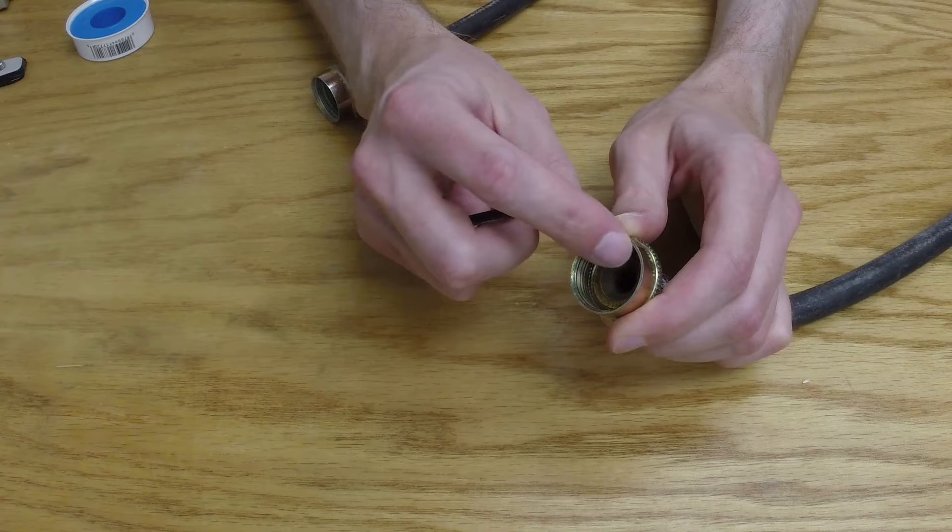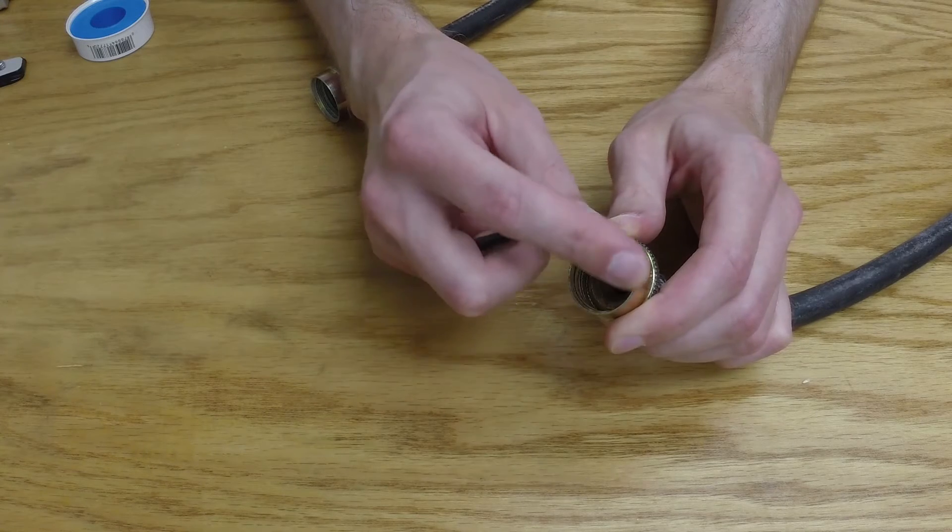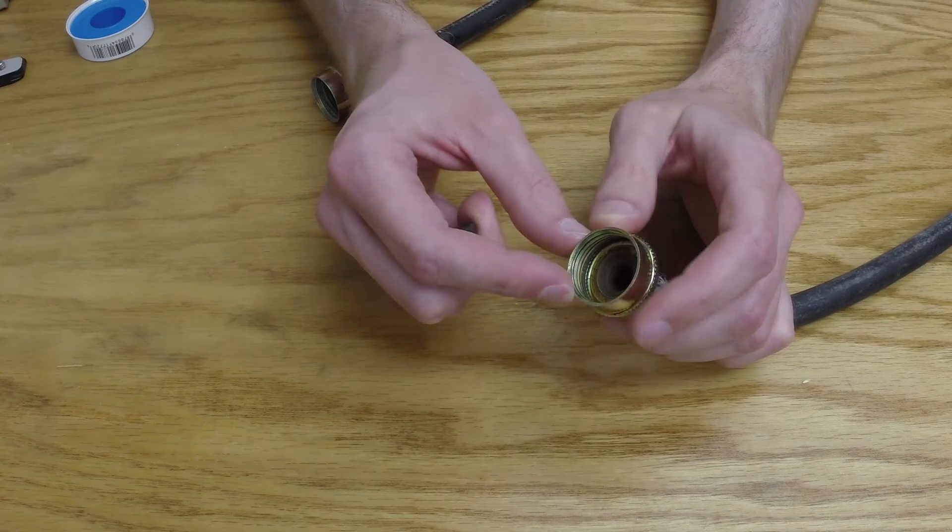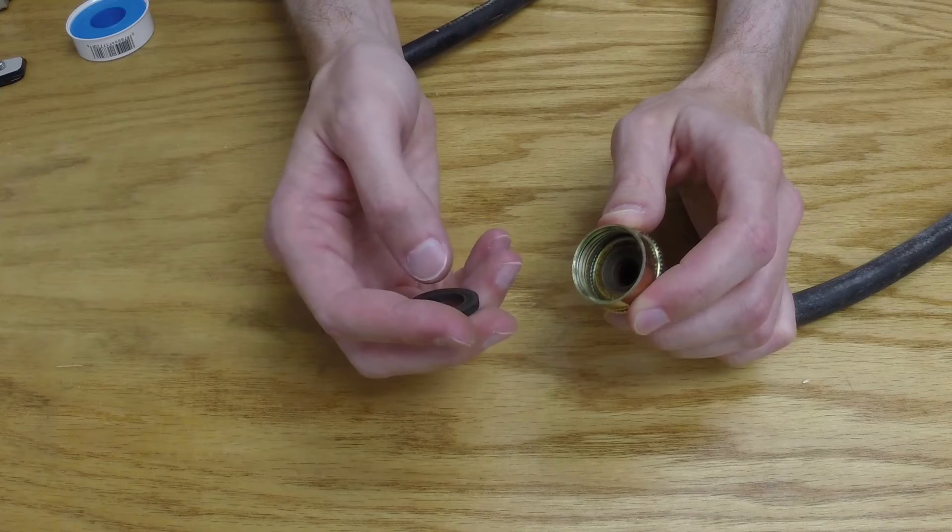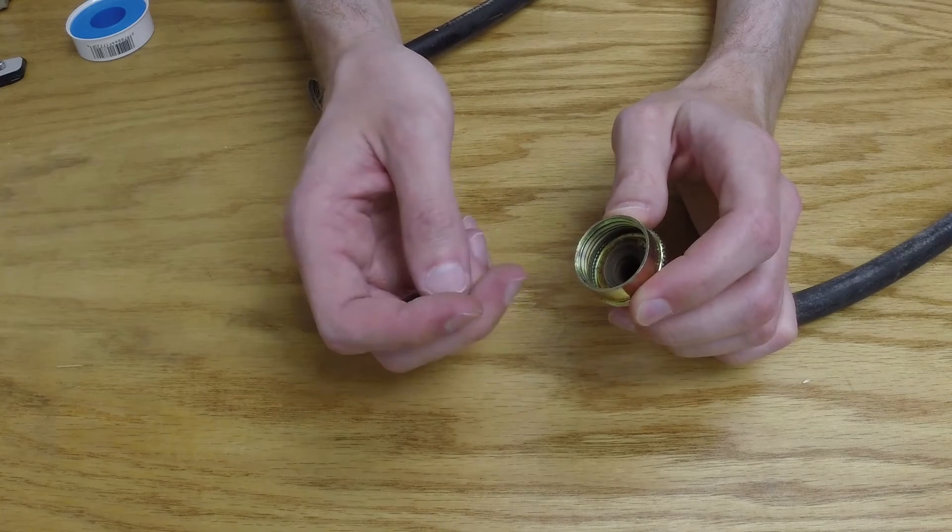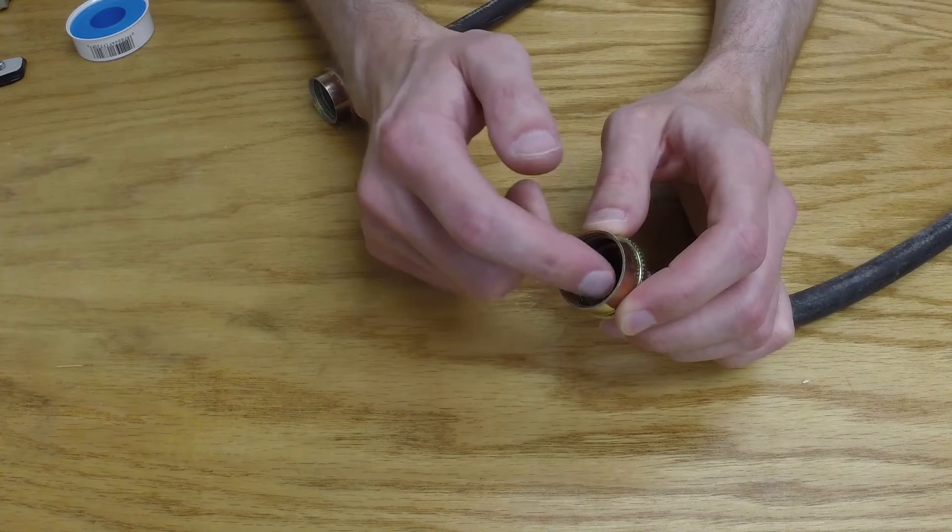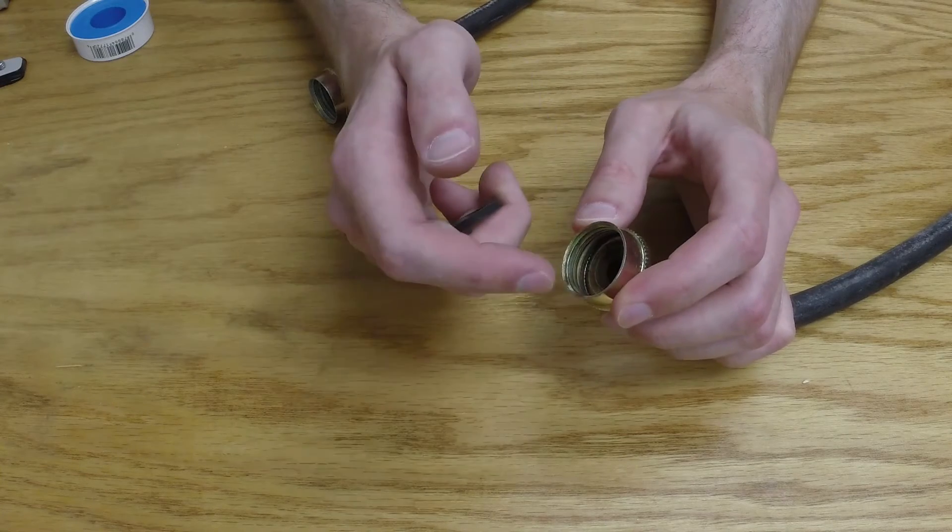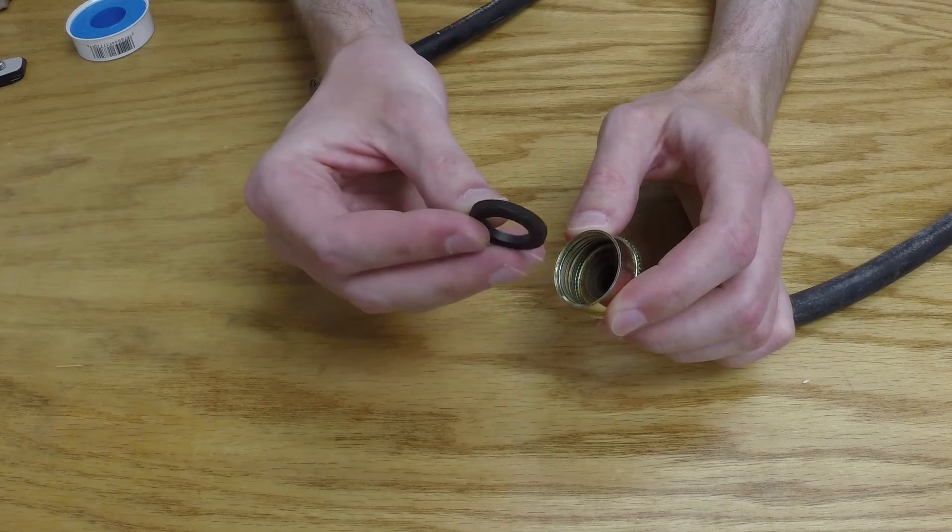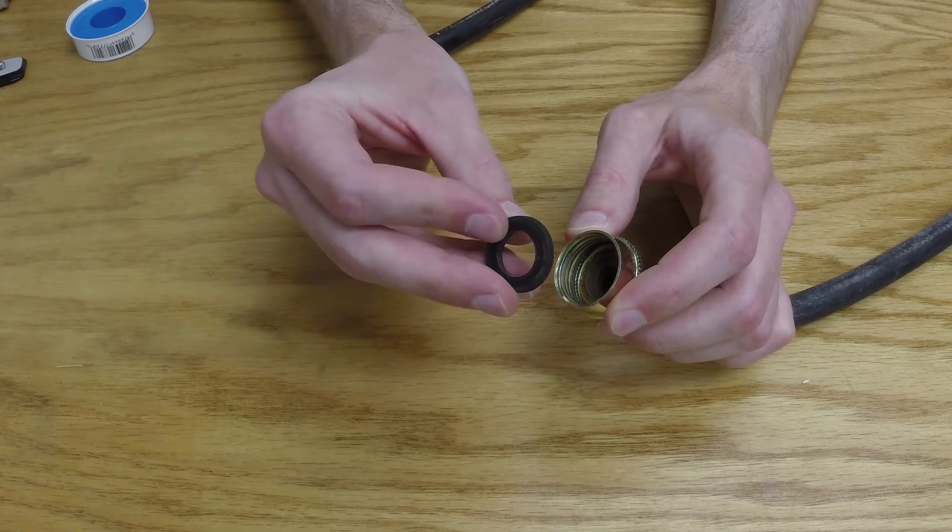In this case, the threads on this fitting do not supply any sealing. They supply a compressive force. But unlike our flared fitting, the compressive force is not used to shove the actual surfaces together, though they will come together. What we're actually trying to do is compress the gasket.